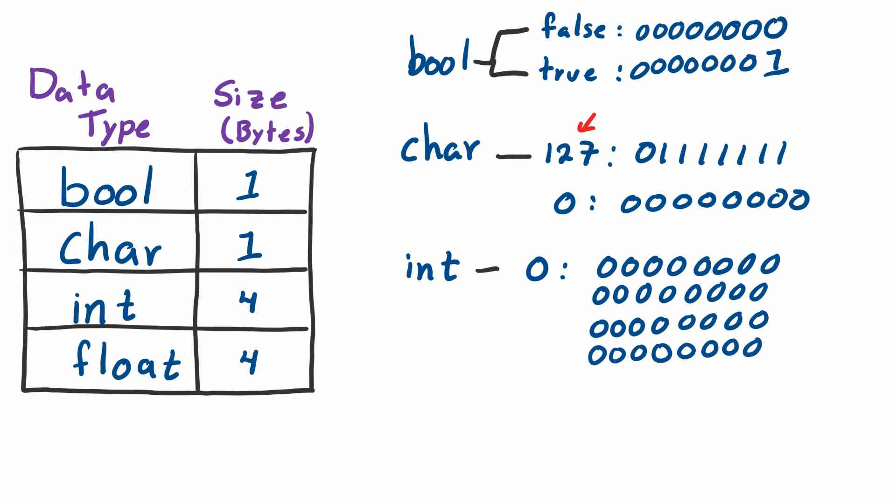The formula to calculate how big of an integer we can represent is two to the number of bits that we have. So four bytes is 32 bits minus one—I'll explain why—and then we subtract minus one. You might know why this minus one. If we look at char, there's 128 characters yet the largest value we can represent is 127. Why not 128? That's because we also have to represent the value zero.